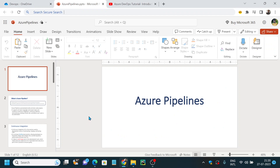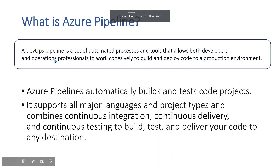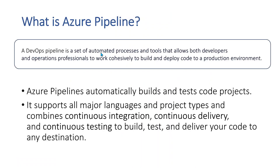So what is Azure Pipelines? Before understanding Azure Pipelines, let's try to understand what is a pipeline in general. A DevOps pipeline is a set of automated processes and tools that allows both developers and operational professionals to work cohesively to build and deploy code to a production environment. In general, a pipeline is an automation activity which allows both the development team and operation team to work together.